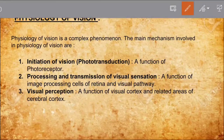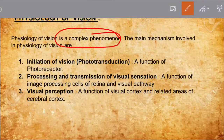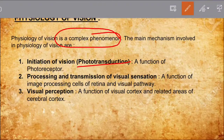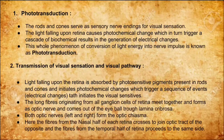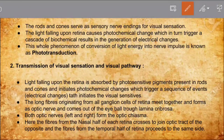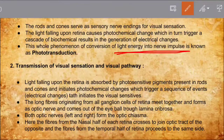Physiology of Vision is a complex phenomenon. The main mechanisms are: First, Initiation of Vision — phototransduction, a function of photoreceptors. Second, Processing and Transmission of Visual Sensation — a function of image processing cells of the retina and visual pathway. Third, Visual Perception — functioning of the visual cortex related to the cerebral cortex. In phototransduction, the rods and cones are the visual-sensitive organs on the retina — sensory nerve endings for visual sensation. Light falling upon the retina causes photochemical changes which trigger a cascade of biochemical results, generating electrical changes. This whole phenomenon of conversion of light energy into nerve impulses is known as phototransduction.